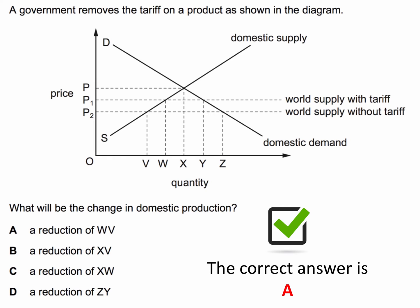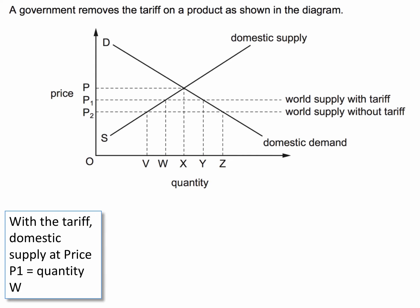Let's work through the explanation for the answer. When there's a tariff in place, let's think about world supply with a tariff. Domestic producers — for example domestic steel manufacturers — basically have to accept the world price. At price P1, they can supply quantity W. They use their domestic supply curve to establish what price they can get, and then do as best as they can given that price.